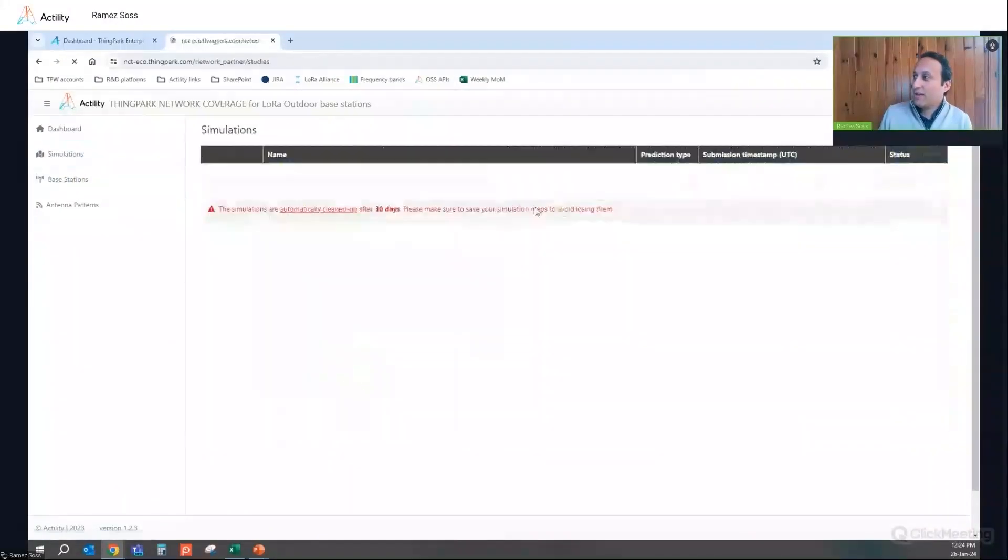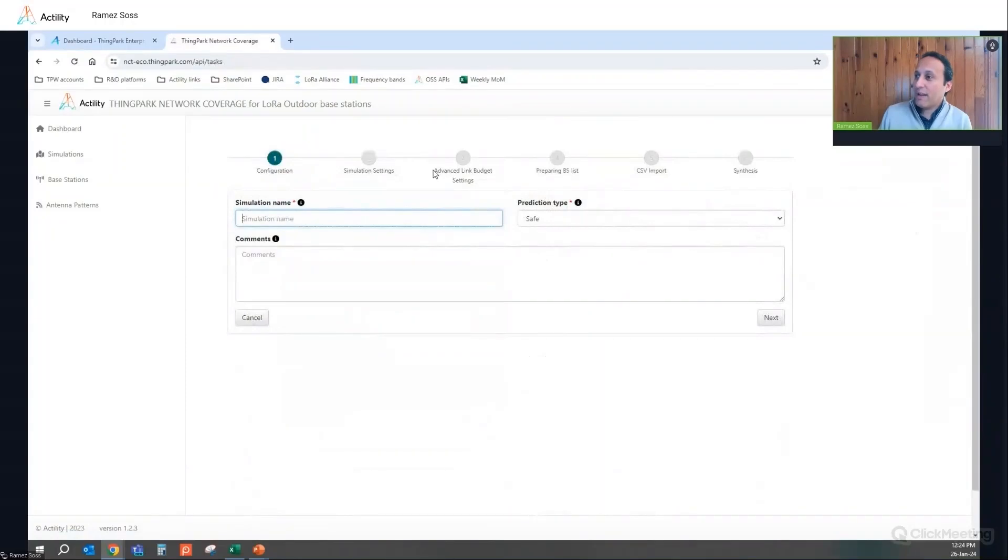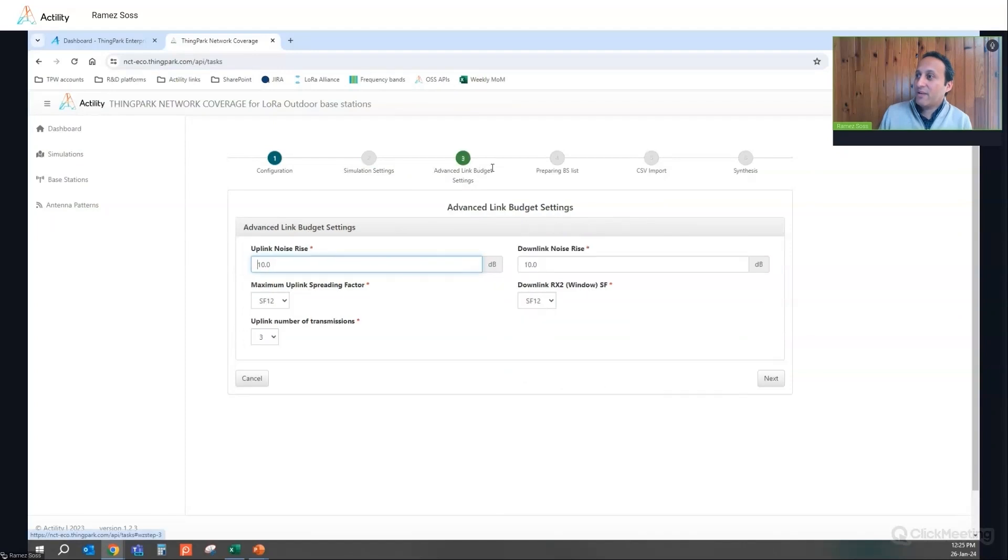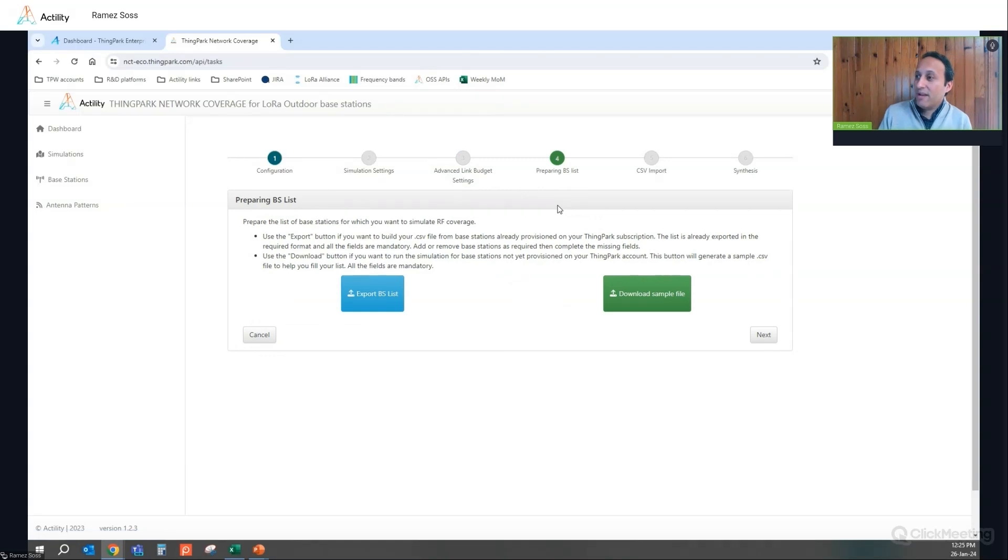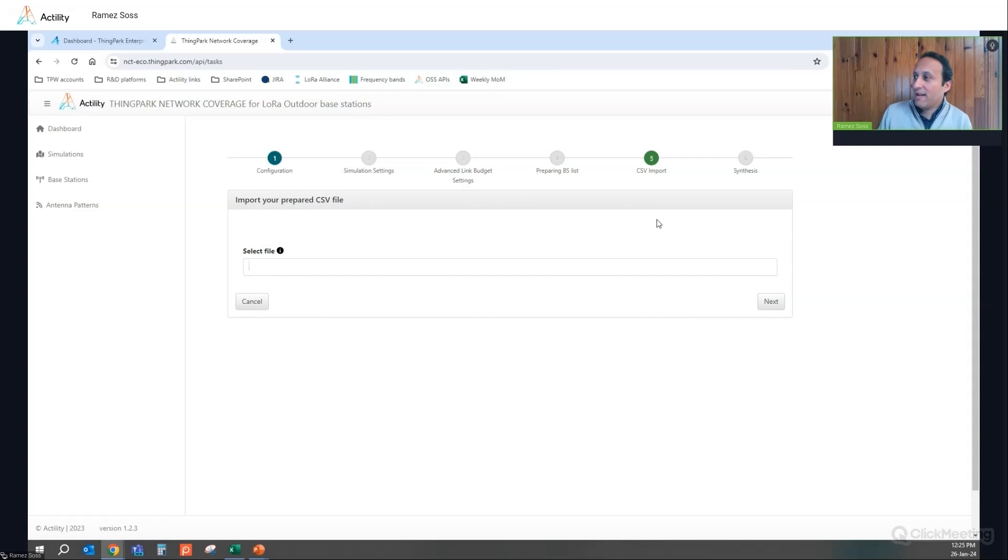And if you want to set a new simulation to add a new simulation, so you go here and you follow the different steps, starting by setting the prediction type of your simulation, whether it's safe or optimistic prediction, which will dictate the appropriate propagation model for each scenario. And then you can set your simulation settings from the device and the regulatory settings. And then you can set, if necessary, you can change the default settings of your link budget settings by setting your uplink and downlink noise rise or the maximum spreading factor or the number of repetitions. And then you can prepare the list of your base stations. Either you can do a green field assessment for new gateways not yet included into your ThinkPark account or you can reuse gateways from your ThinkPark account by exporting the list of existing base stations already retrieved under your ThinkPark account. And once you are ready, you just import your CSV file and then you are done.